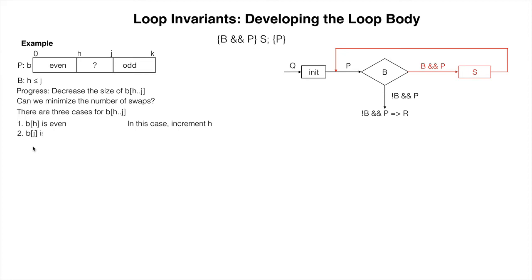B sub H dot J is odd. Likewise, decrease J. This also decreases the size of the unknown segment, also while maintaining the invariant.